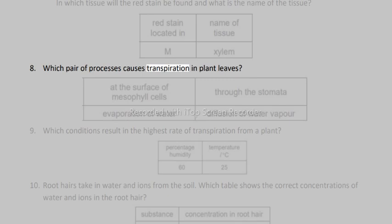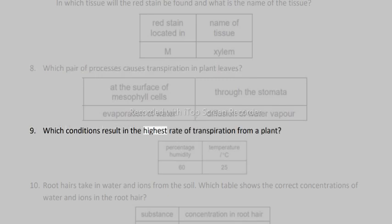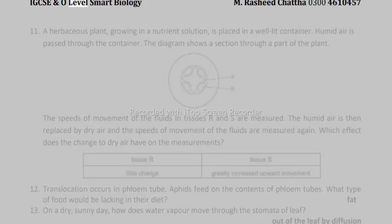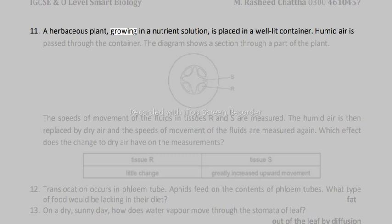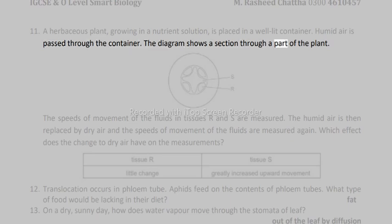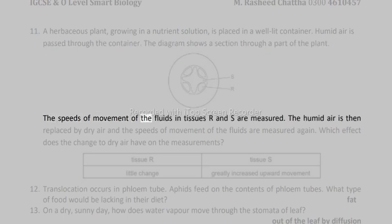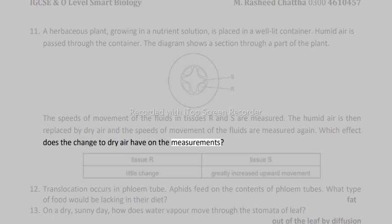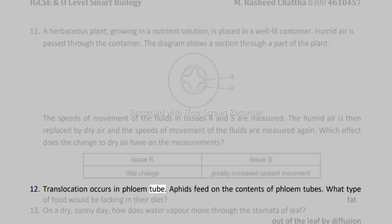8. Which pair of processes causes transpiration in plant leaves? 9. Which conditions result in the highest rate of transpiration from a plant? 10. Root hairs take in water and ions from the soil. Which table shows the correct concentrations of water and ions in the root hair? 11. A herbaceous plant, growing in a nutrient solution, is placed in a well-lit container. Humid air is passed through the container. The diagram shows a section through a part of the plant. The speeds of movement of the fluids in tissues are measured. The humid air is then replaced by dry air and the speeds of movement of the fluids are measured again. Which effect does the change to dry air have on the measurements? 12. Translocation occurs in phloem tubes. Aphids feed on the contents of phloem tubes. What type of food would be lacking in their diet?